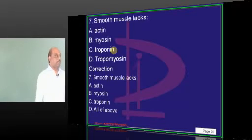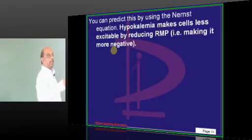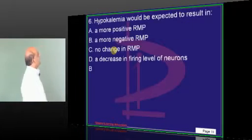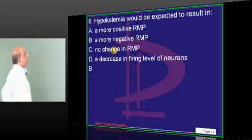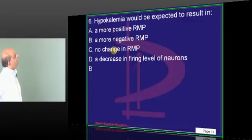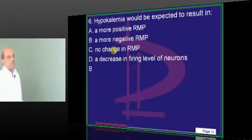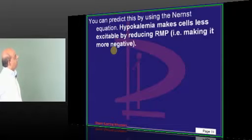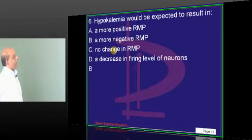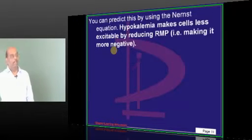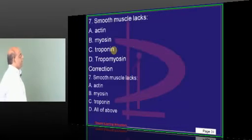Option D — a decrease in the firing levels of neurons — also looks reasonable. There may be a dual answer in this question. This question also requires a note about smooth muscle: smooth muscle has neither troponin nor tropomyosin, so option D should be 'all of the above.' Answer C also becomes reasonable — one small correction noted in the paper.